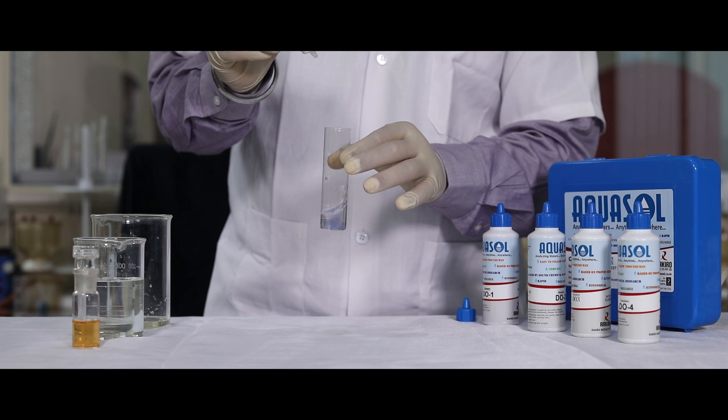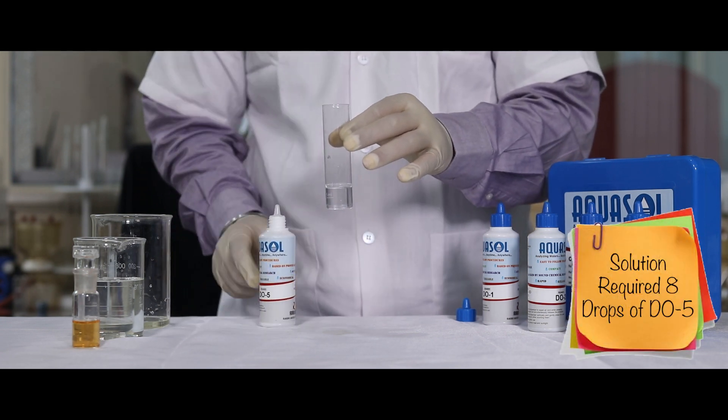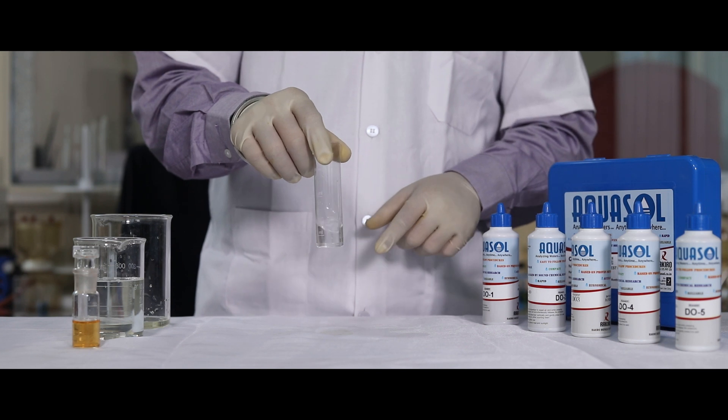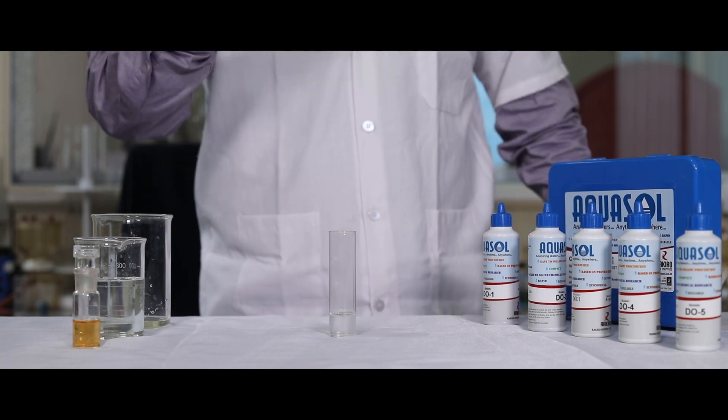For example, in this test, 8 drops of DO5 reagent was added. That is, 8 multiplied by 0.5 is 4. 4 is the ppm of the sample we tested. You can check the DO in different ranges.